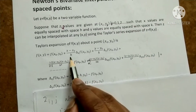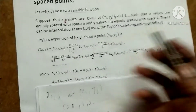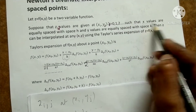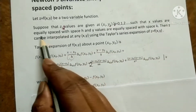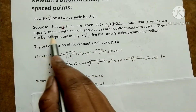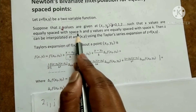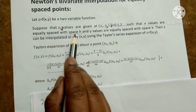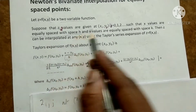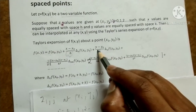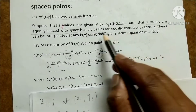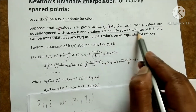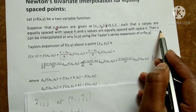Here h is the spacing between successive x values — that means x values are equally spaced with spacing h. Similarly k is the spacing between successive y values.